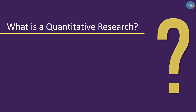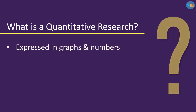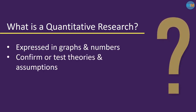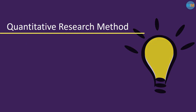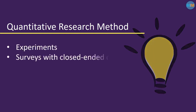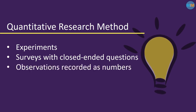What is quantitative research? Quantitative research is expressed in graphs and numbers. It is used to confirm or test theories and assumptions. This type of research can be used to establish generalizable facts about a topic. Some of the common quantitative methods include experiments, surveys with close-ended questions, and observations recorded as numbers.